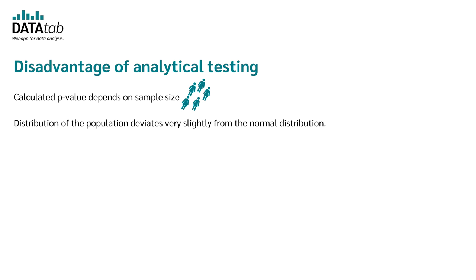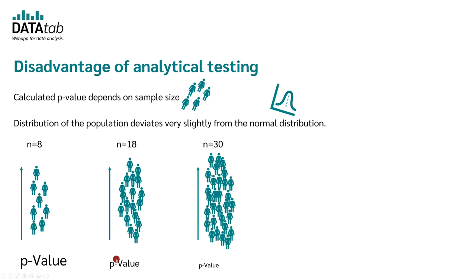Let's assume the distribution in your population deviates very slightly from the normal distribution. Then, if you take a very small sample, you will get a very large p-value and thus, you will assume that it is normally distributed data.